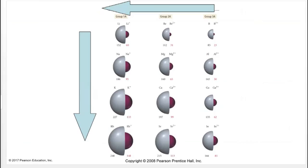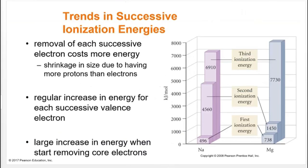We can learn more about an atom's position on the periodic table from its ionization energies. For sodium, the first ionization is easy, but between the first and second there's a tenfold jump — because the second electron would come from a noble gas configuration. For magnesium, the first and second ionizations are manageable, but the third is very large because removing it would disrupt the noble gas configuration it reaches after losing two electrons.